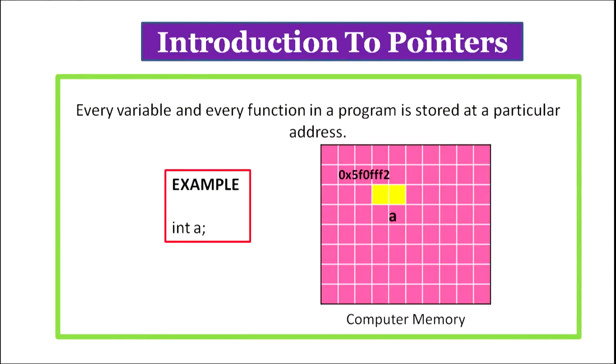Till now, we were accessing the value of a variable by its name. Whenever we declare a variable, a size of memory according to the data type of the variable is allocated and this memory is referred to by the name of the variable. If we have declared a variable a of type integer, then two bytes of memory is allocated and this memory has a certain address. Every variable in every function in a program is stored at a particular address. A pointer is used to refer to a variable indirectly, that is by its address and not by its name.